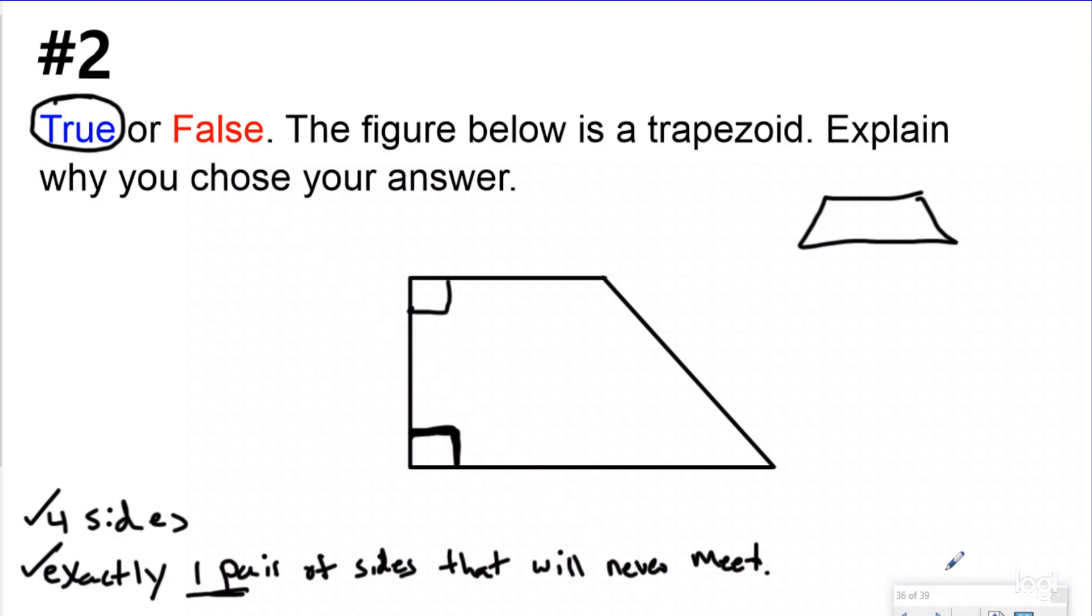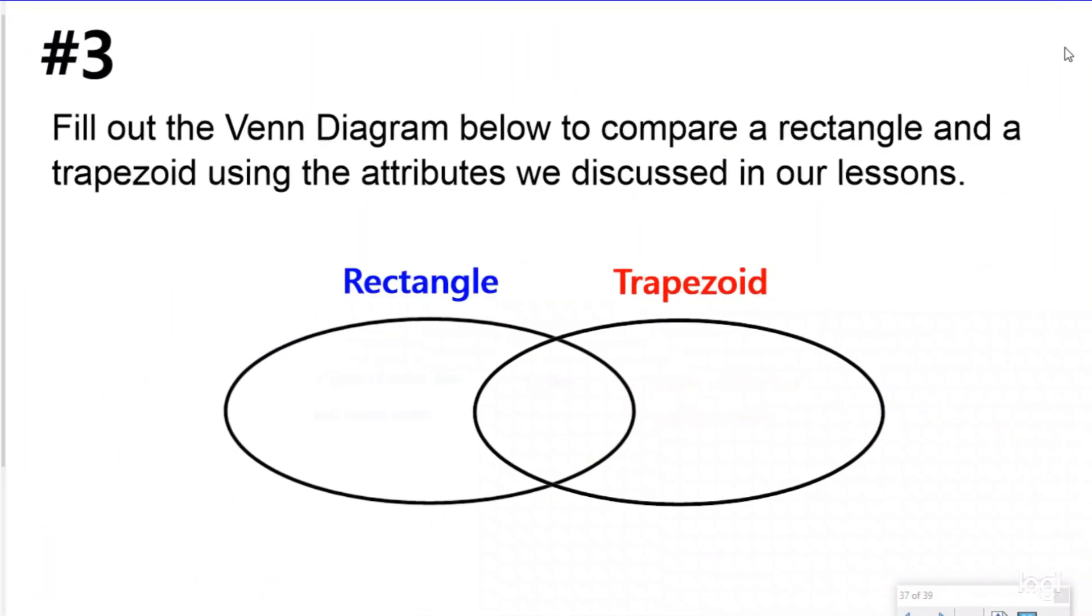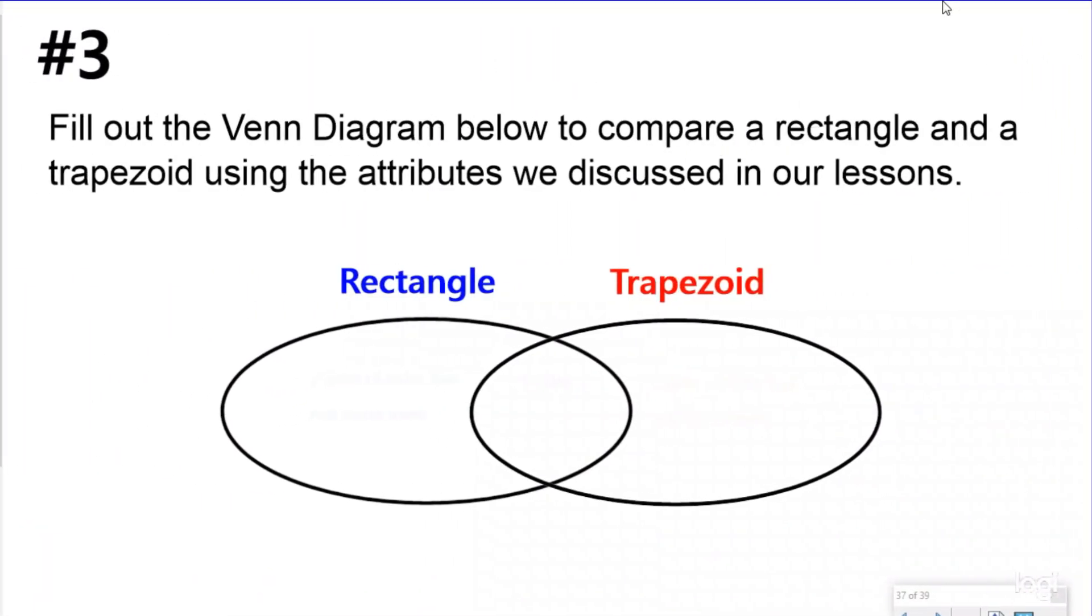Let's take a look at the most challenging question, number three. Number three says fill out the Venn diagram below to compare a rectangle and a trapezoid using the attributes we discussed in our lesson. So we're looking for what are the similarities and what are the differences. If you are a thinking maps person, you could use a double bubble and get the same type of thought process.